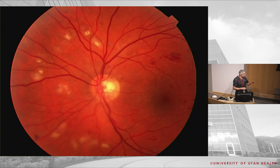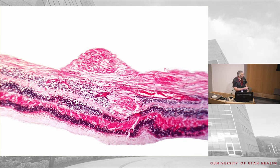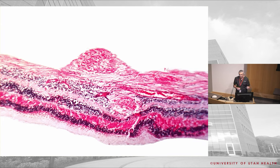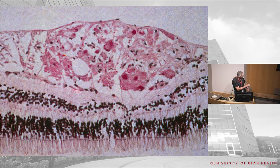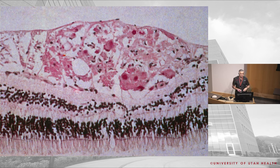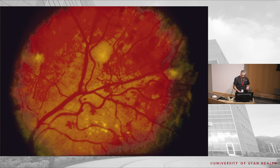Here we see lots of cotton wool spots, superficial and fluffy. Pathologically this is a focal ischemic infarct in the nerve fiber layer and ganglion cell layer — the superficial retina. At high power the ganglion cells appear very swollen from the ischemia. Once the ischemia kills those cells, the cotton wool spots go away, but multifocal ERG can reveal areas where cells have dropped out.